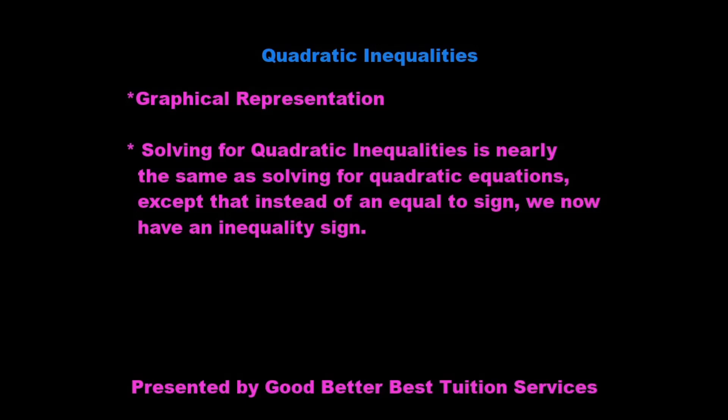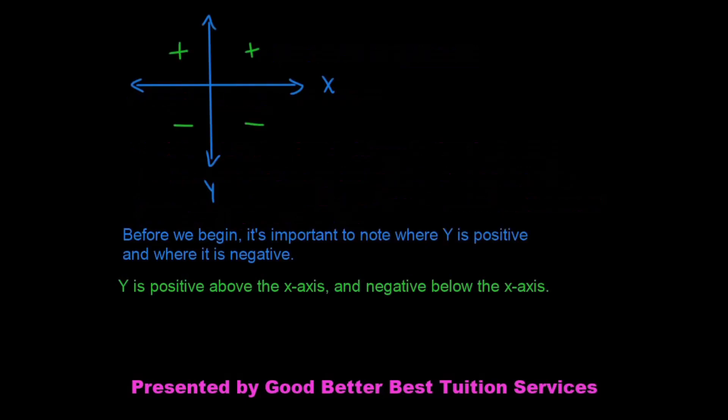Before we begin, I'd like to point out a few things. The first thing is that quadratic inequalities is nearly the same as solving for quadratic equations, except that instead of an equal to sign, we now have an inequality sign. I'd also like to point out that we must know where y is positive and where it is negative in order to solve inequalities. y is positive above the x-axis and y is negative below the x-axis.